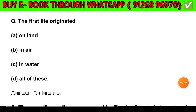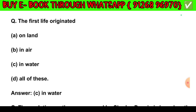Question number 8. The first life originated: Option A — On land. Option B — In air. Option C — In water. Option D — All of these. The answer is Option C: In water.